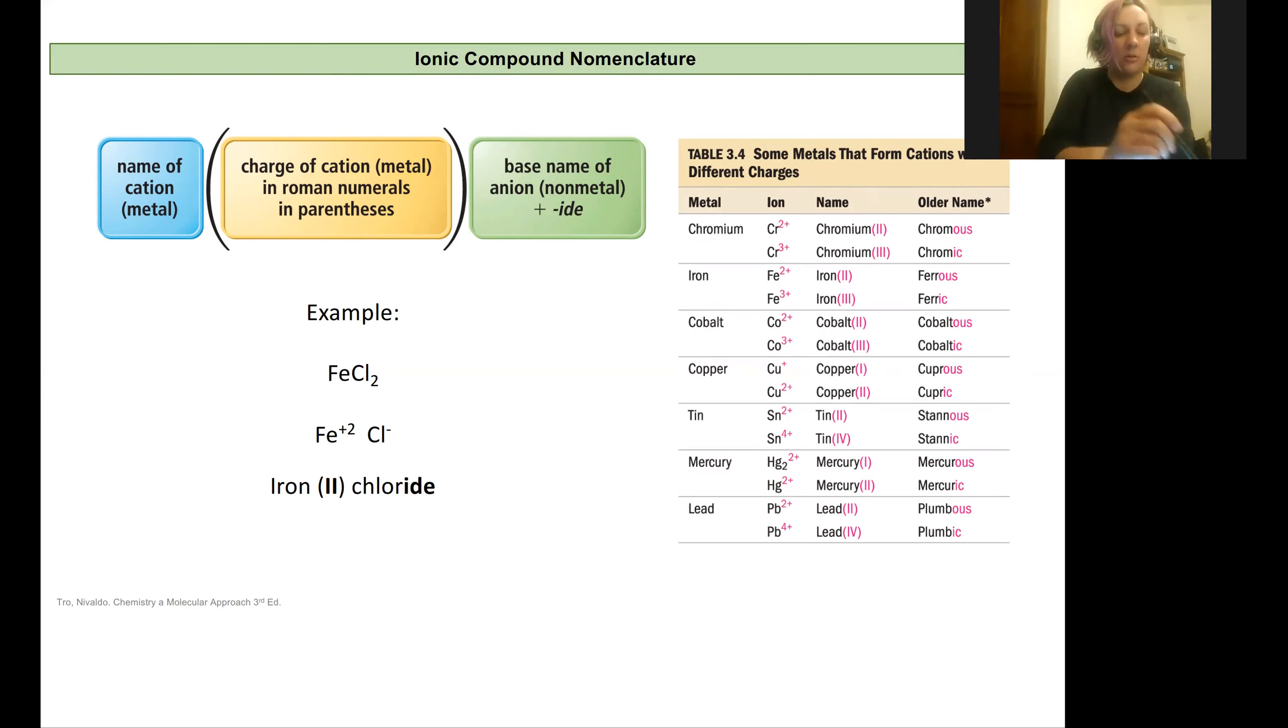The first thing I do is I identify my cation and I identify my anion. Great. Iron will be my cation. I'll name it first. I go to my periodic table and I can just name it iron. There we go.